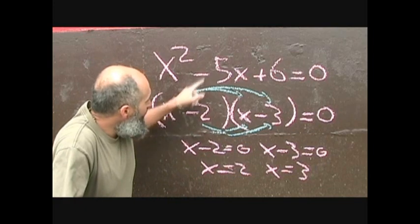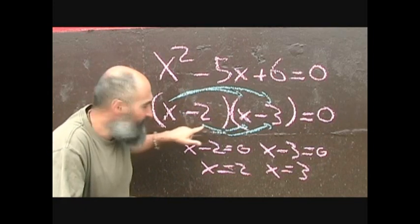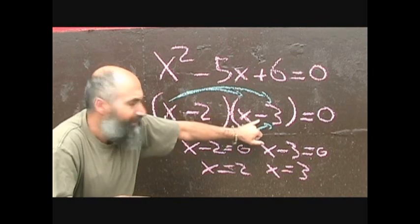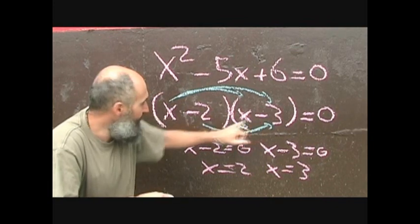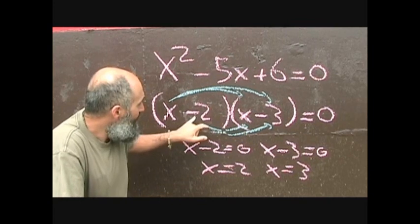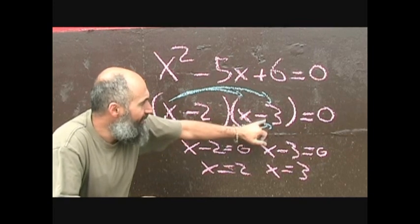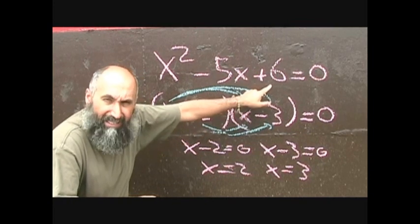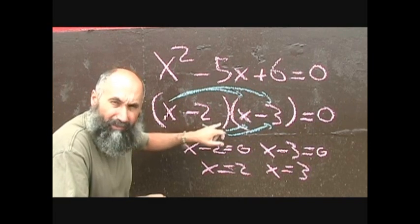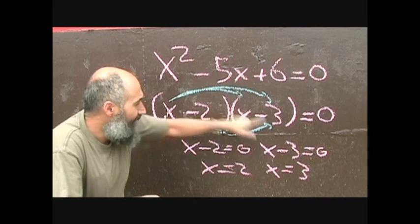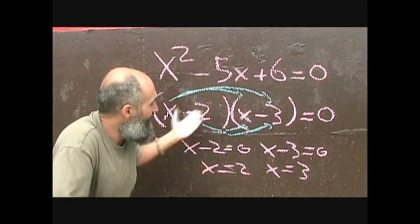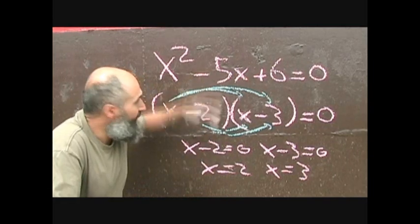To go back from factored form to expanded form: x times x is x squared; x times negative 3 is negative 3x; negative 2 times x is negative 2x; and negative 2 times negative 3 is 6. Then negative 3x plus negative 2x gives you negative 5x. It's just straightforward FOILing — we're expanding, and that takes you back to the original trinomial.